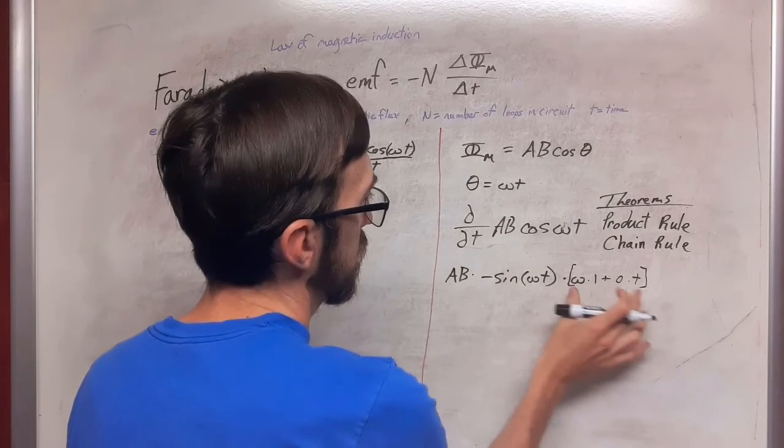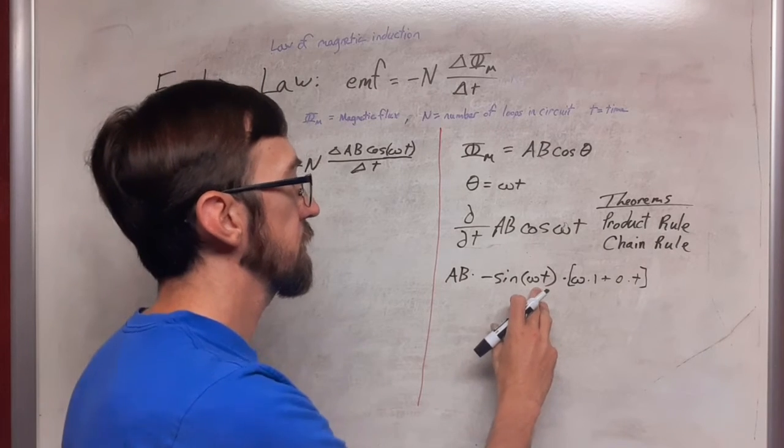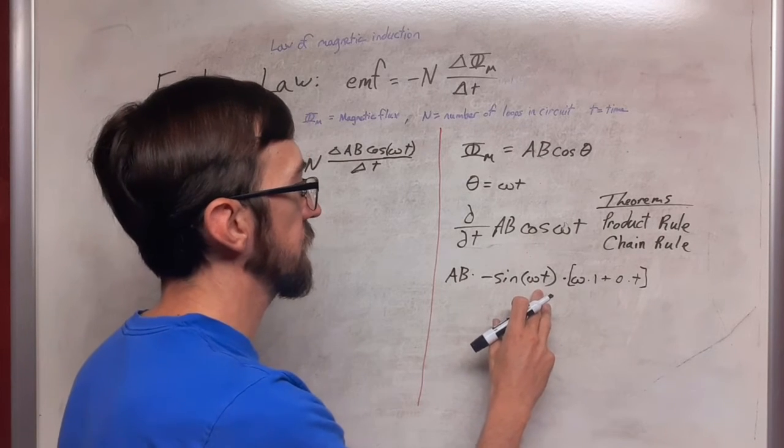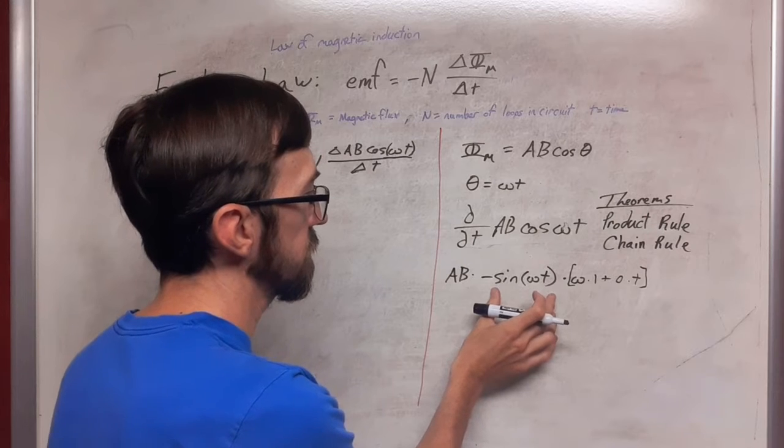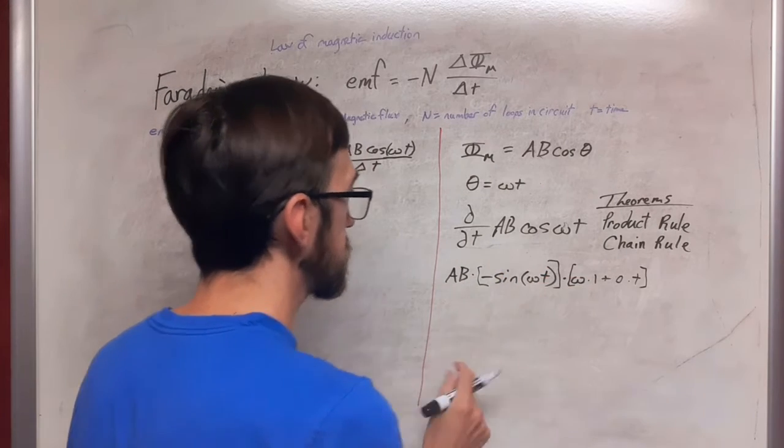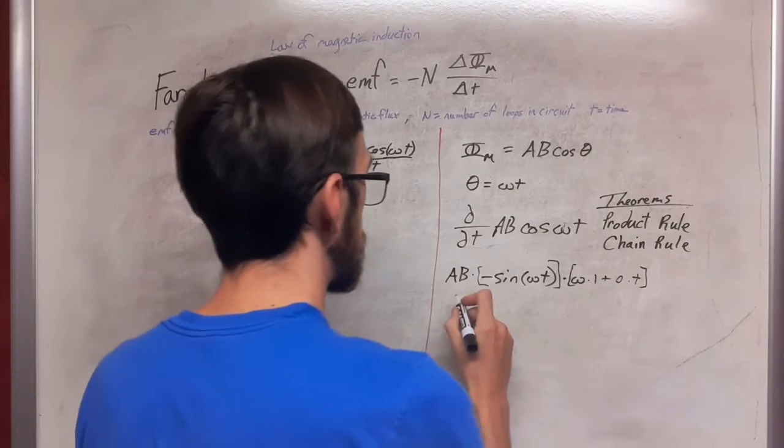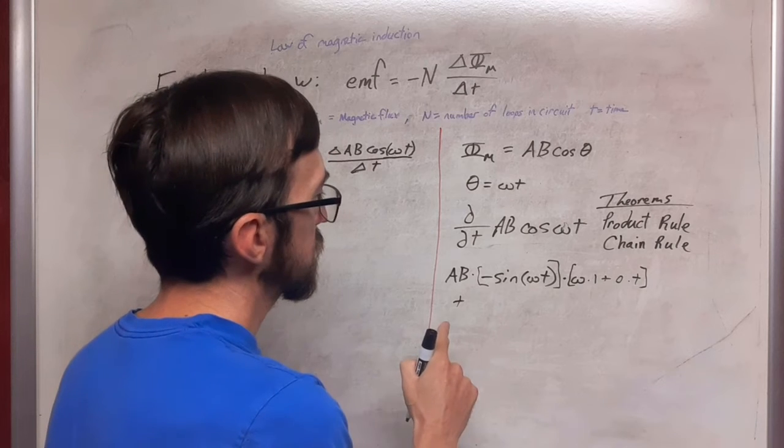So this is the derivative of omega t. So this is the derivative of the interior function here multiplied by the negative sine omega t and that's all being multiplied by AB.